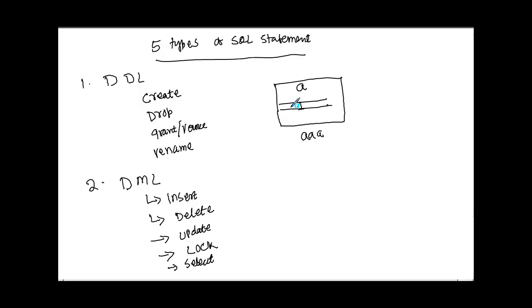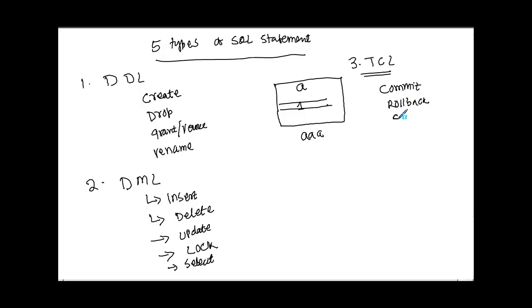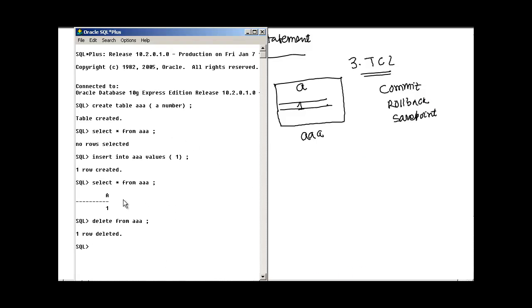The next statement type is Transaction Control Language. Examples include COMMIT, ROLLBACK, and SAVEPOINT. Let's look at some examples of how these work.